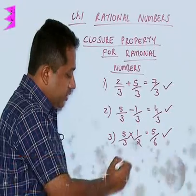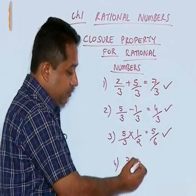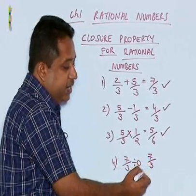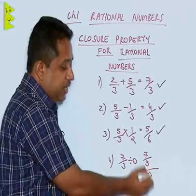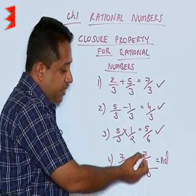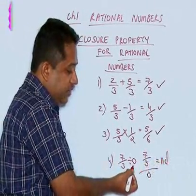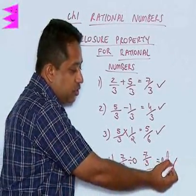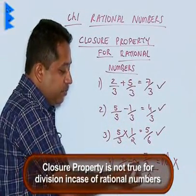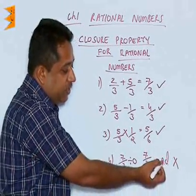What about division? Let us say 7 upon 3 is divided by 0. Now, here there is a problem because when we divide any number by 0, we know that the answer is not defined or infinity. Therefore, except for this case of division by 0, we say that division by 0 is not possible. So, I can say that the closure property does not hold good in case of rational numbers when the denominator is 0, as the result is not defined.